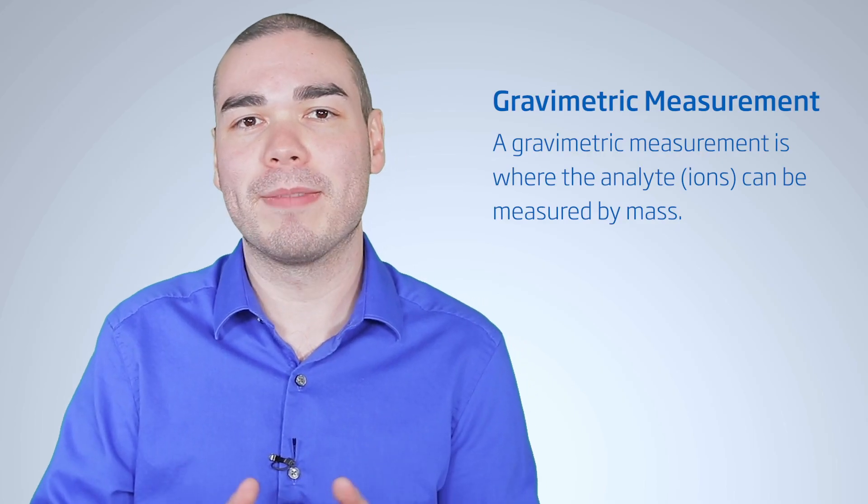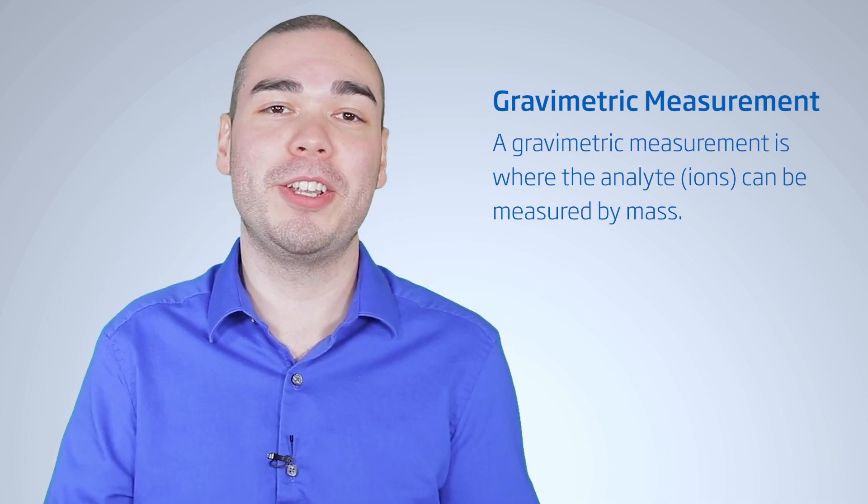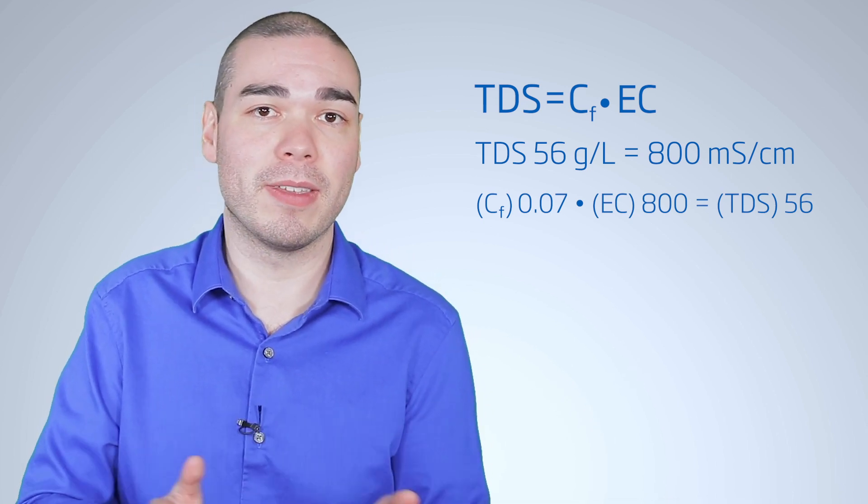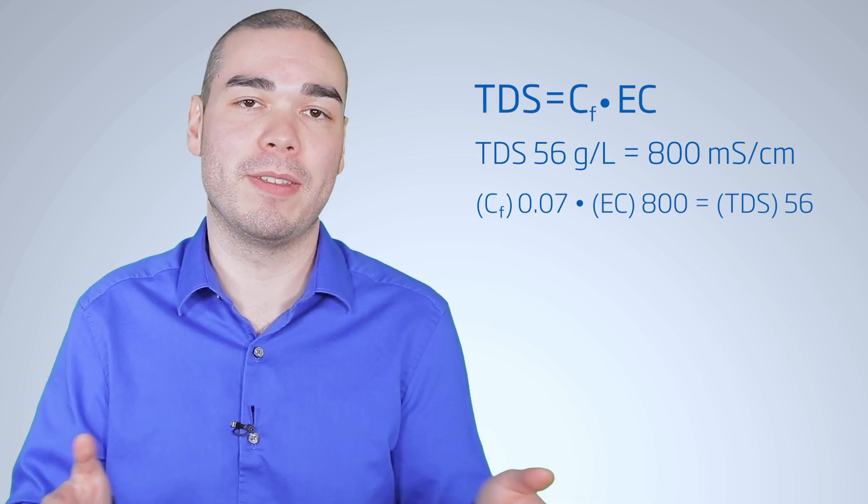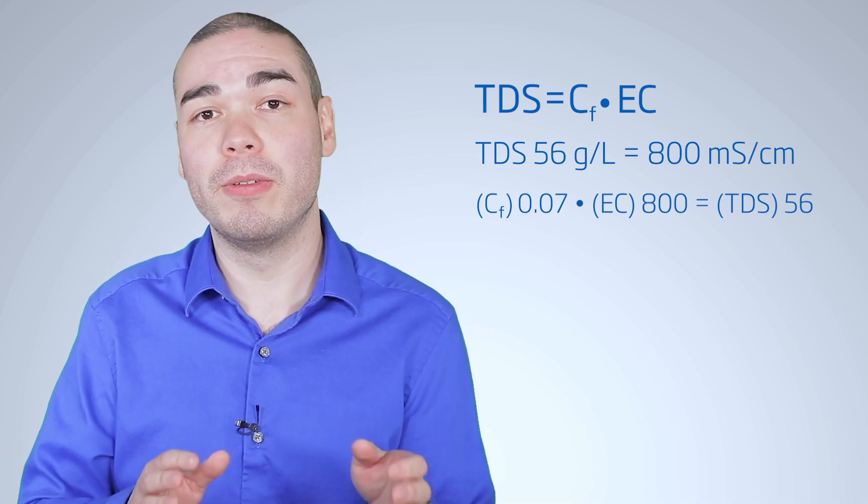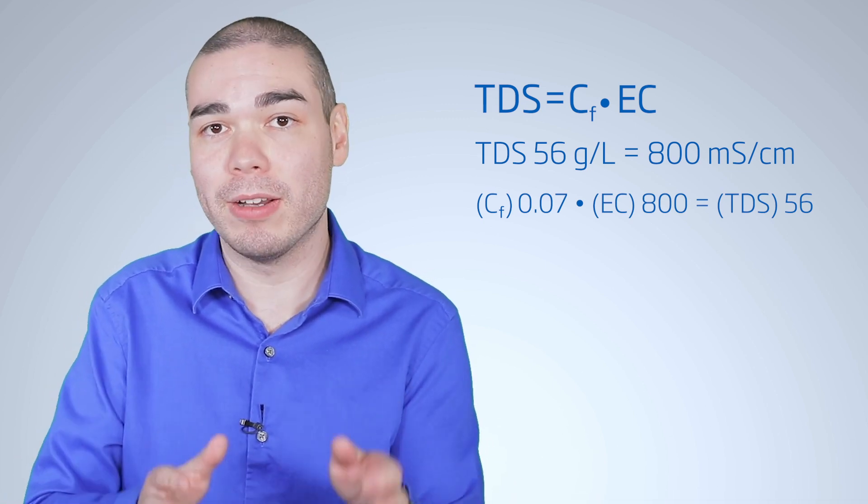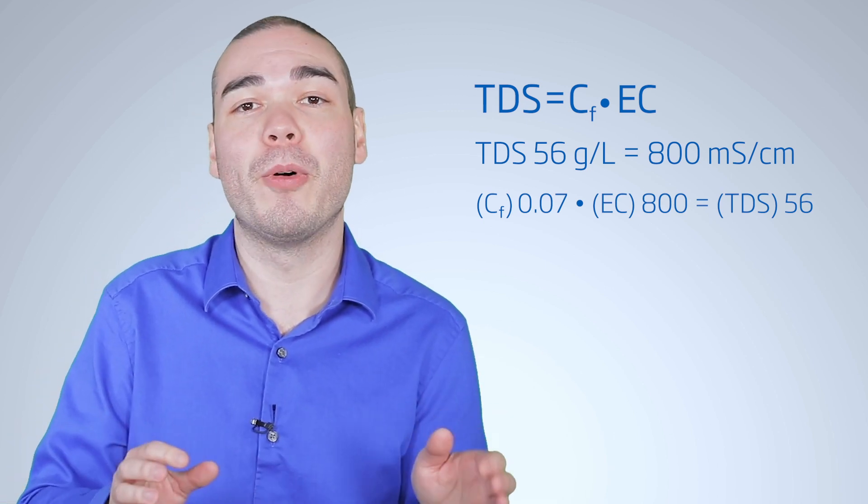This measurement is considered an indirect measurement, as there is a conversion that must be done from EC to TDS. A true TDS measurement is a gravimetric measurement. Every solution has a unique conversion ratio. The conversion ratio is calculated using a known TDS value for the substance, then divided by the measured conductivity value of that same substance. For example, if your solution has a known TDS of 56 grams per liter, and your measured EC was 800 millisiemens per centimeter, then your conversion ratio, or factor, would be 0.07.